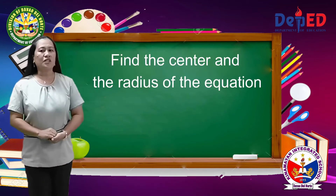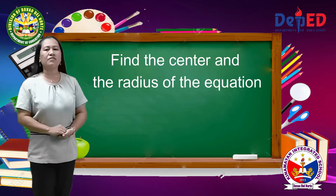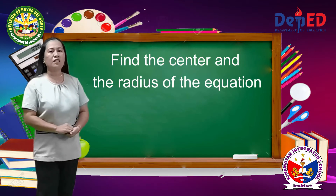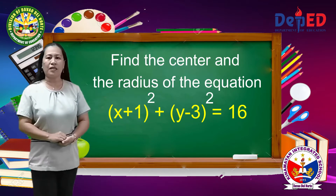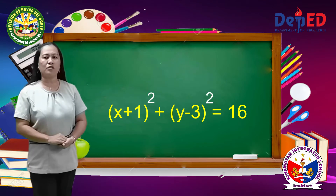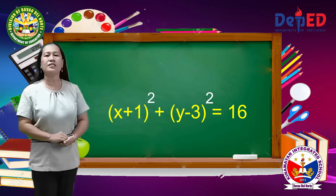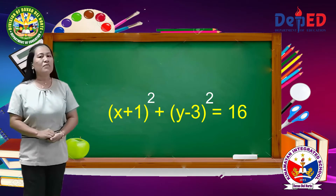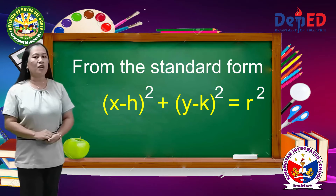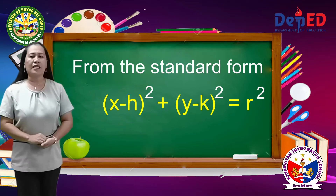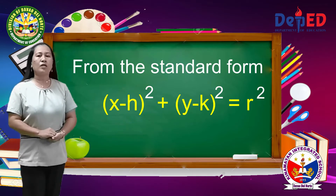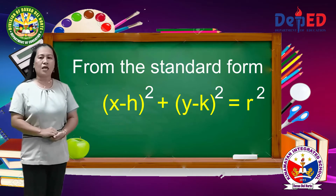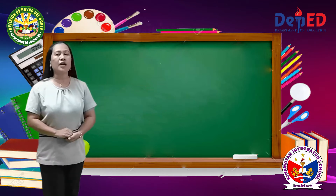Example: Find the center and the radius of the equation — quantity x plus 1 squared plus quantity y minus 3 squared equals 16. From the standard form, quantity x minus h squared plus quantity y minus k squared equals r squared,